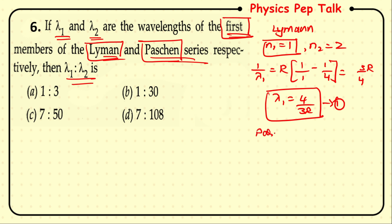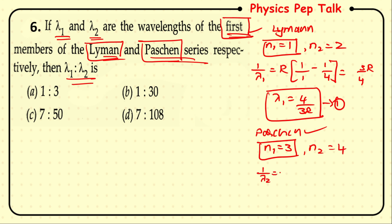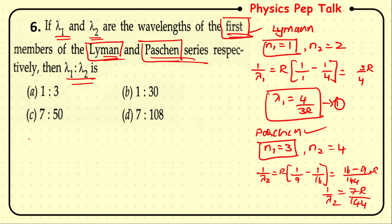For the Paschen series, n₁ = 3; for the first member, n₂ = 4. So 1/λ₂ = R(1/9 − 1/16) = R × 7/144, giving λ₂ = 144/7R (equation 2). Now λ₁/λ₂ = (4/3R) ÷ (144/7R) = (4/3R) × (7R/144) = 28/432 = 7/108. So λ₁ : λ₂ = 7 : 108, and option D is the correct answer.